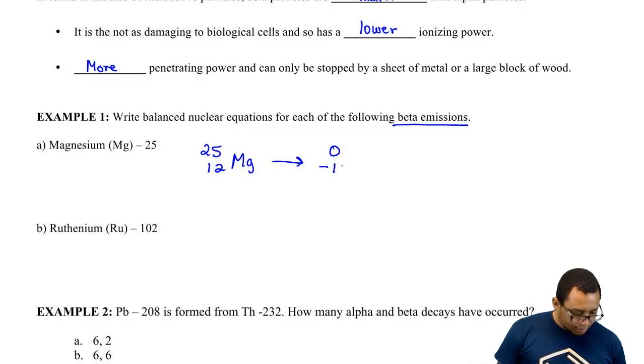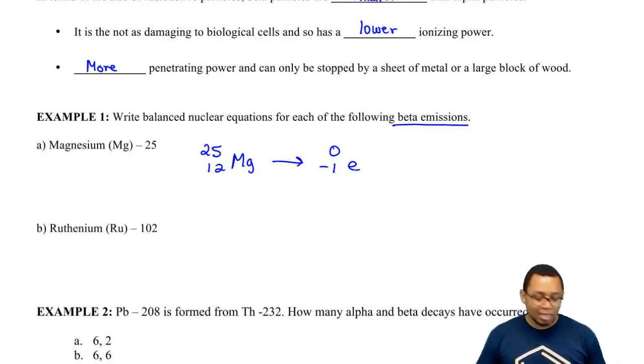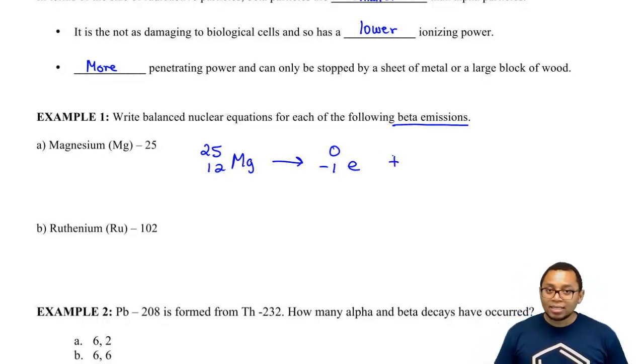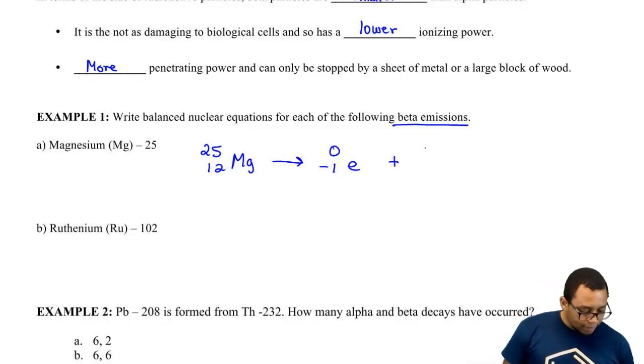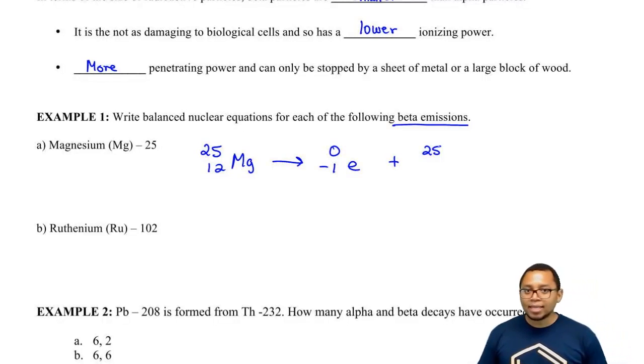It's going to emit a beta particle. So our new element that's being created would still have the same atomic mass.